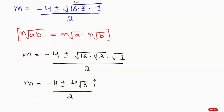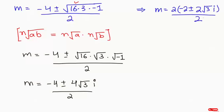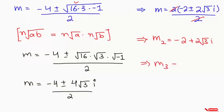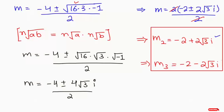Next I take out a common factor of 2: m equals 2 times the quantity minus 2 plus or minus 2 root of 3 iota, all over 2. The 2s cancel, giving us the values of m2 and m3. So m2 equals minus 2 plus 2 root of 3 iota, and m3 equals minus 2 minus 2 root of 3 iota. We get two imaginary complex solutions and one real solution, m equals 4. This is the final answer.